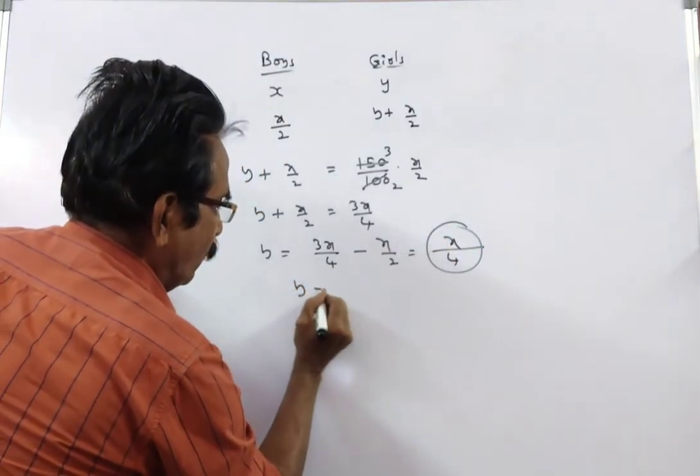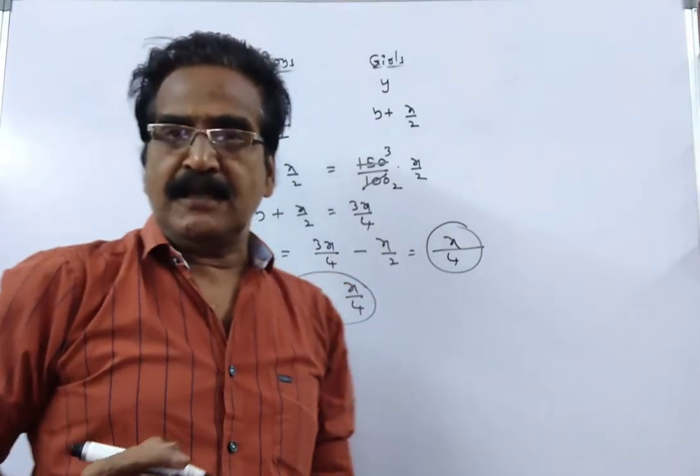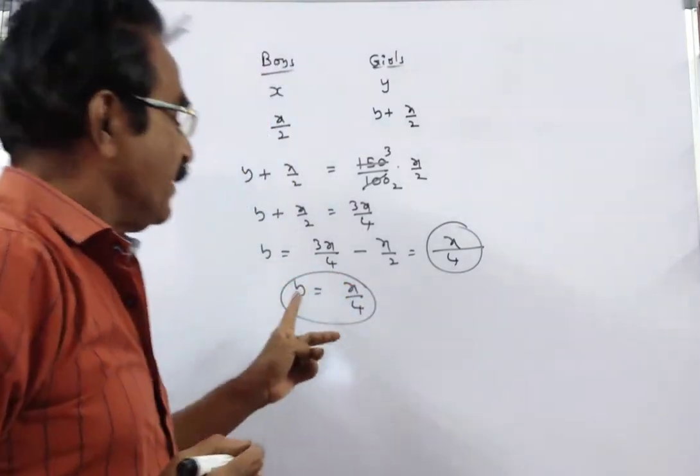So friends, Y is equal to X by 4. This is the relation between X and Y.